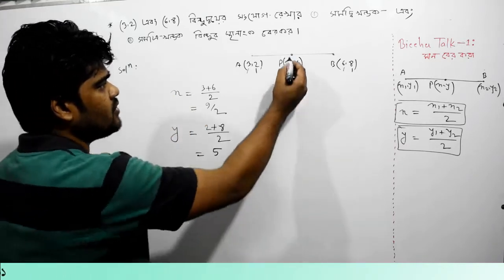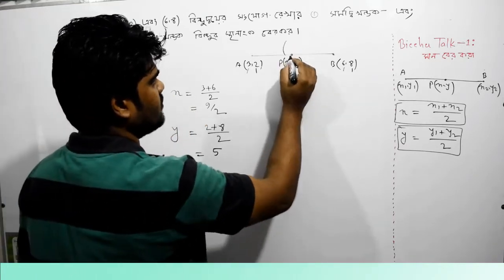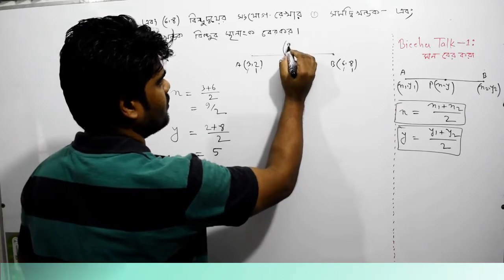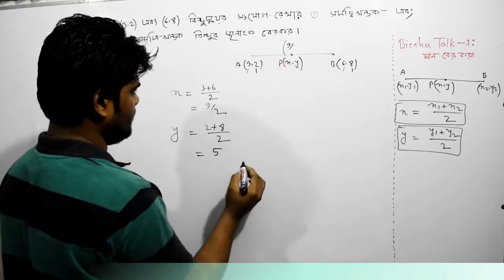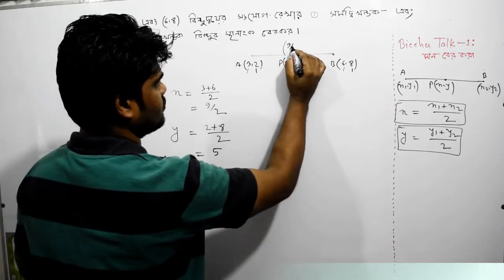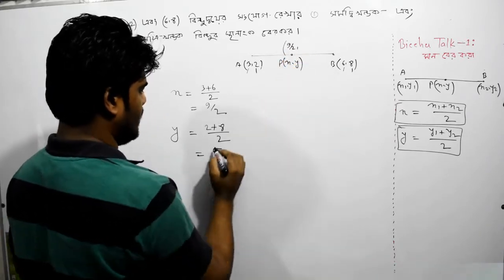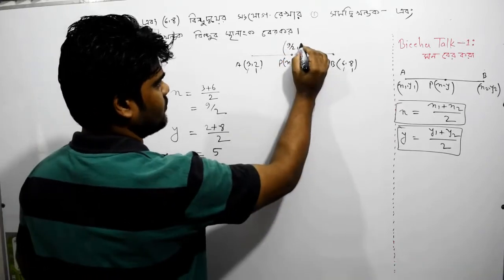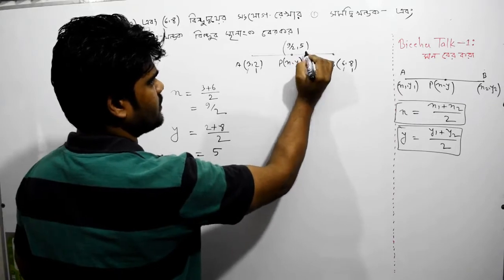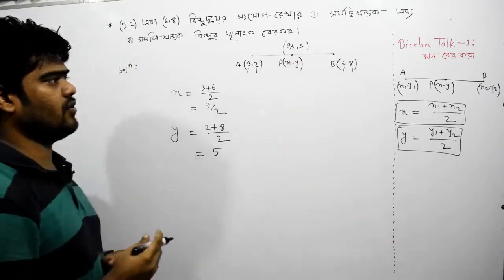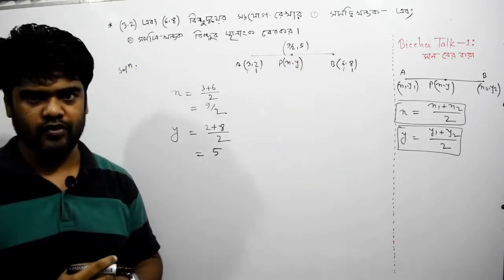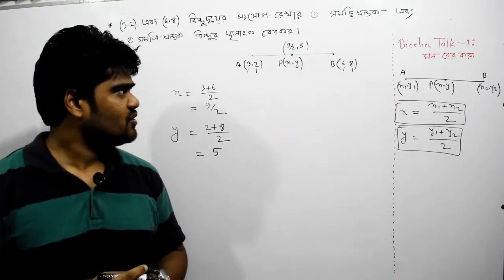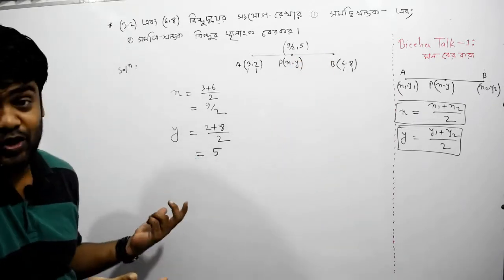tB is 9 divided by 2, which is 5, and this is P, which is 5 times. So, very simple as it is. So the previous one is 2.